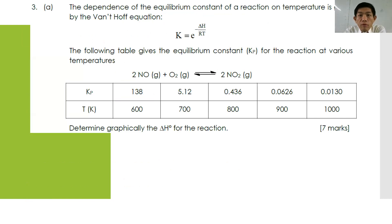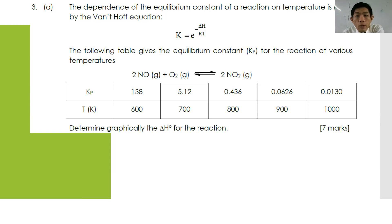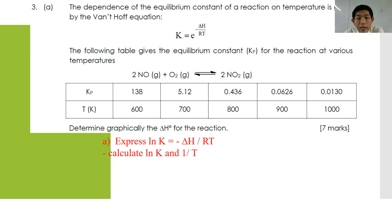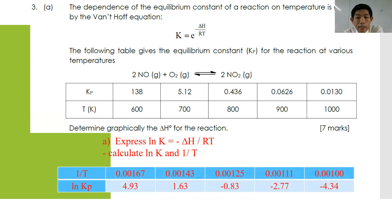We go to question number 3. The dependence of the equilibrium constant on temperature is given by the Van't Hoff equation: ln K = −ΔH/RT + C. The table gives the equilibrium constant Kp for the reaction 2NO + O₂ → 2NO₂ at certain temperatures. Determine graphically the delta H for the reaction. You have to re-express the Van't Hoff equation as ln K = (−ΔH/R)(1/T) + C, and plot the graph of ln K against 1/T.